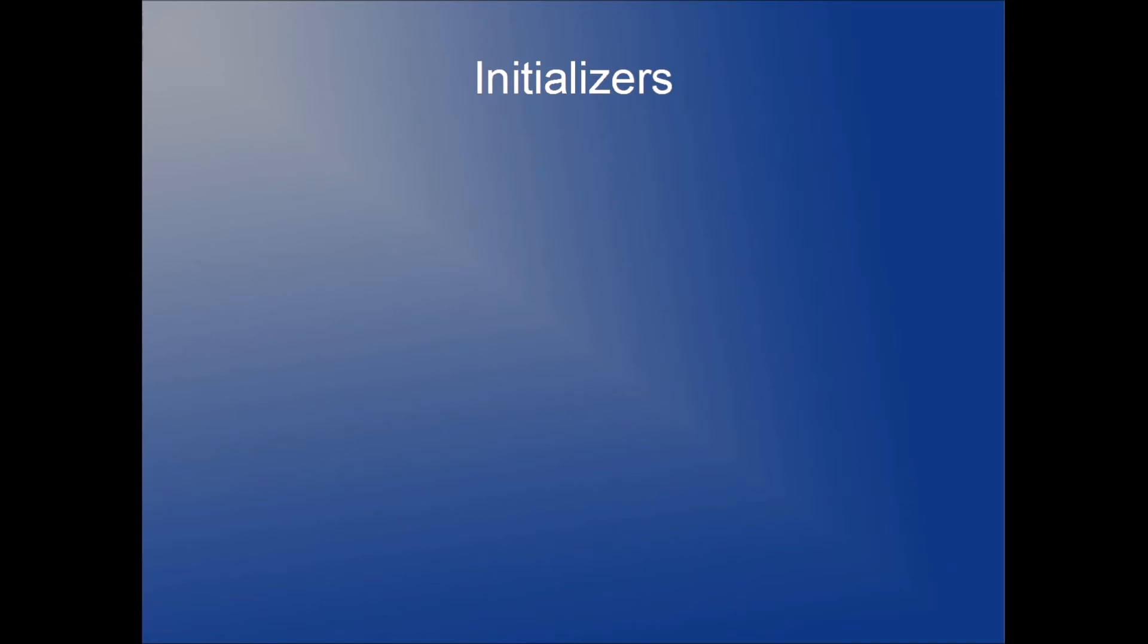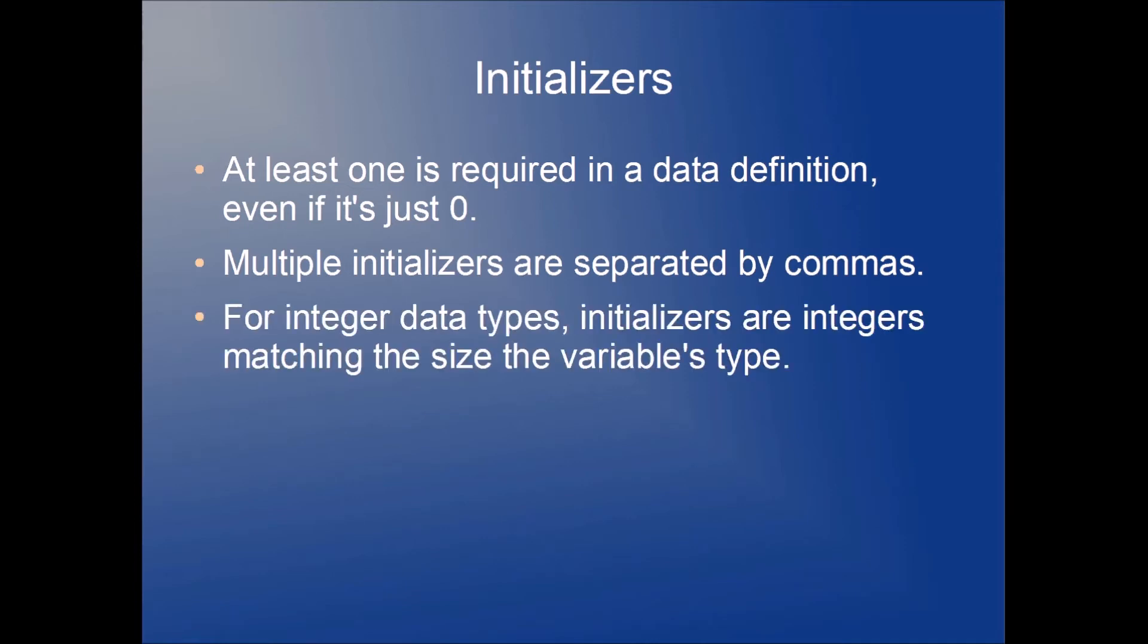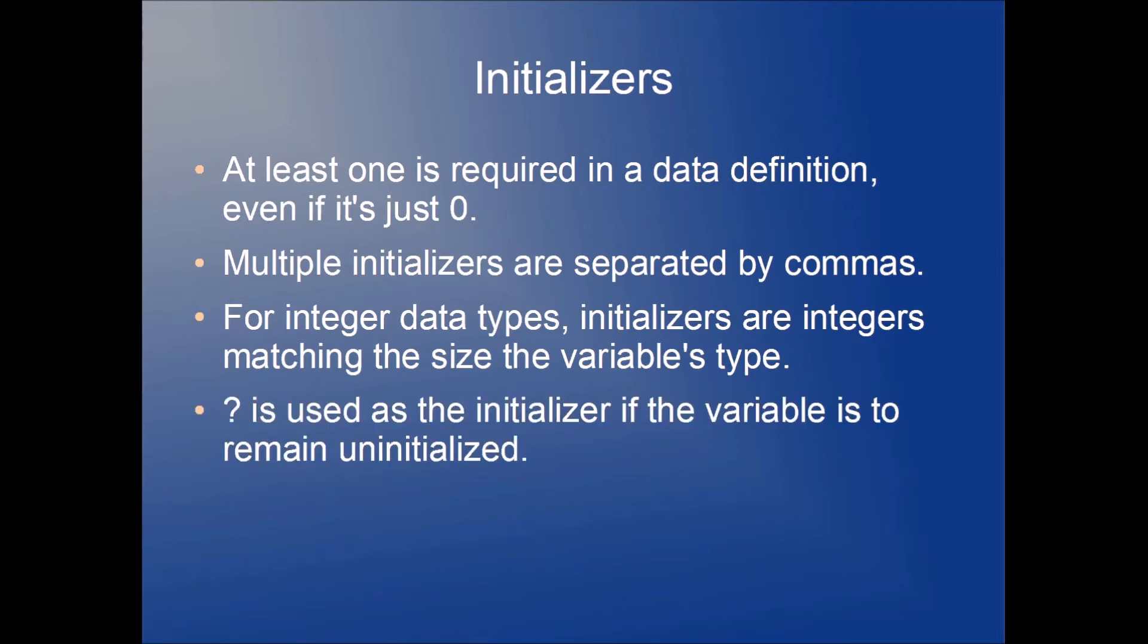So what's an initializer? We mentioned initializers when we looked at the syntax briefly. At least one of these things is going to be required in a data definition, even if it's just zero. Multiple initializers are going to be separated by commas. For integer data types, initializers are integers matching the size of the variable's type. A question mark is used as initializer if the variable is to remain uninitialized. So initializers are values that we are going to set our variable to.